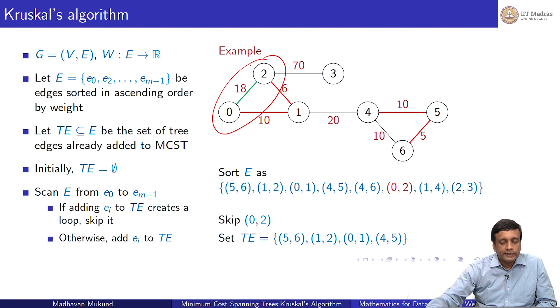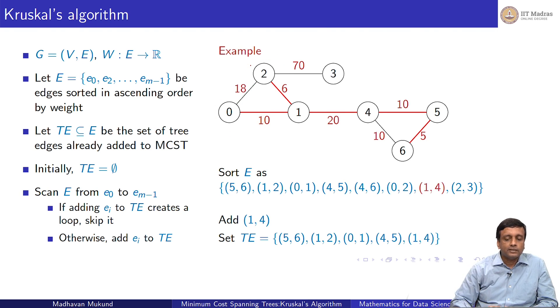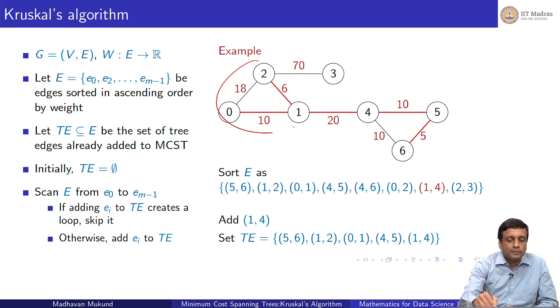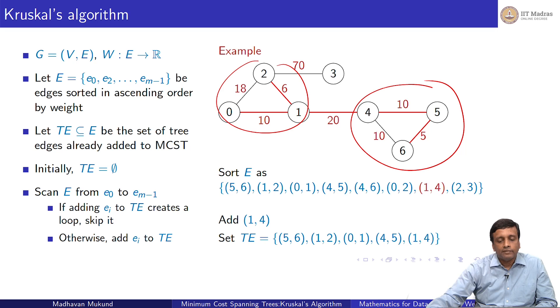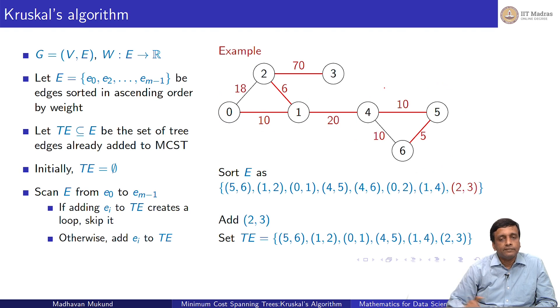After 18, I go to edge 20. That is not a problem because it takes two different components and connects them. I add it. Finally, the edge of weight 70 connecting 2 to 3 is added. This is how Kruskal's algorithm works.